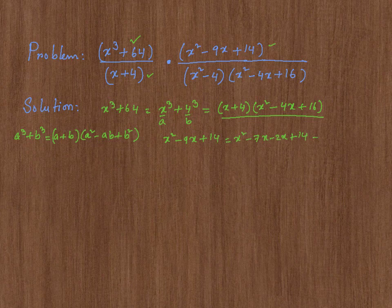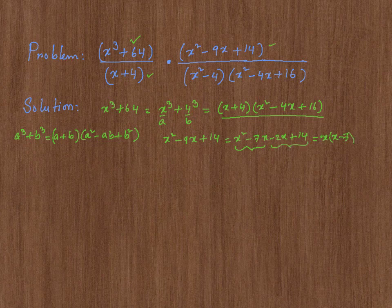I could factor out between the first two, x. That's going to give me x minus 7. Between the second two, I could factor out negative 2, x minus 7, which is x minus 7 times x minus 2.